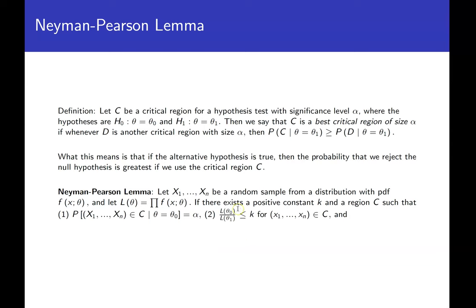The second condition: the likelihood of theta naught over the likelihood of theta one is less than or equal to K for anything in your critical region. If X1 through XN is in the critical region, you reject. We want the likelihood that theta naught is true to be less than the likelihood that theta one is true — we don't want to reject if the null is true, but we do want to reject if it's not.